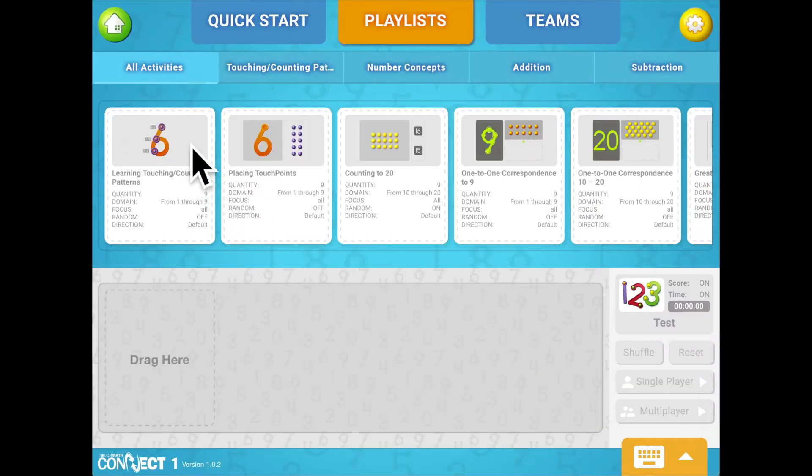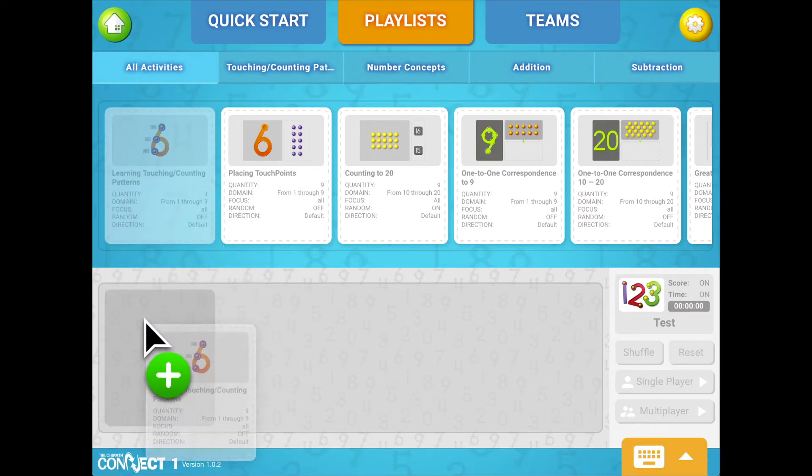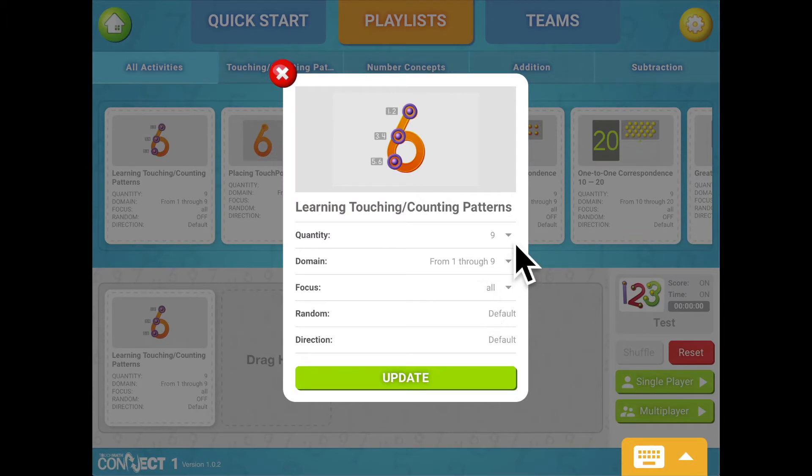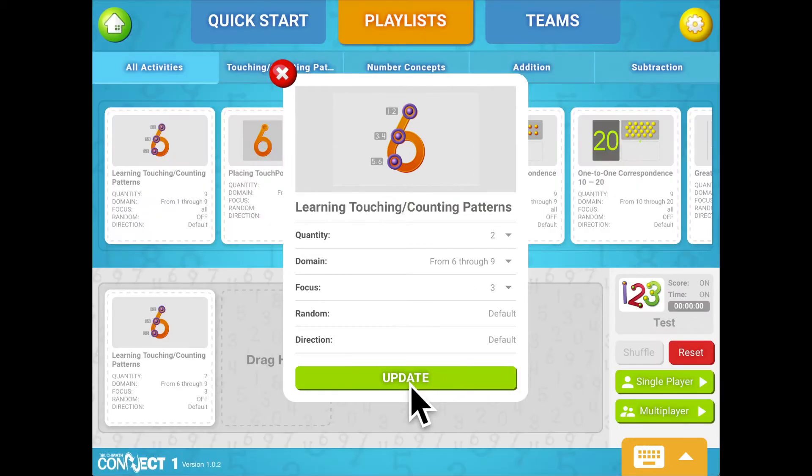To add activities to your playlist, simply drag and drop activity cards to one of the drag here positions. For each activity added to a playlist, you can customize the quantity of problems as well as the domain and focus. Further customization includes sequential or random order, and vertical or horizontal problem presentation can also be selected at this time. Click the Update button when customizations are complete.